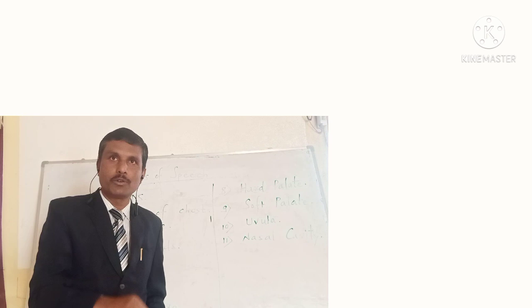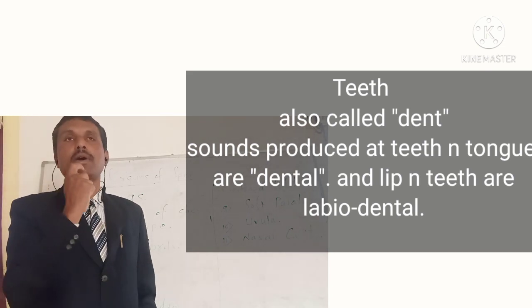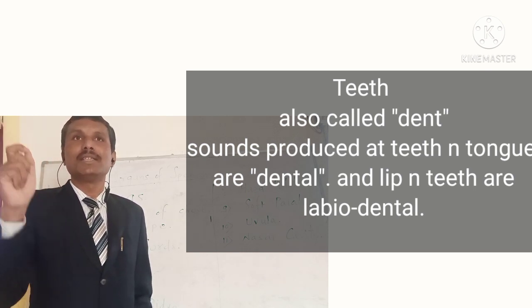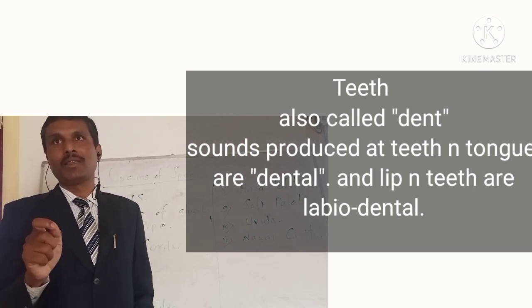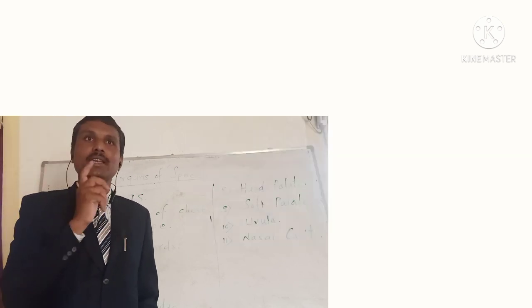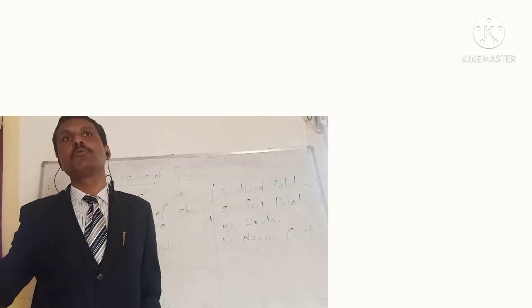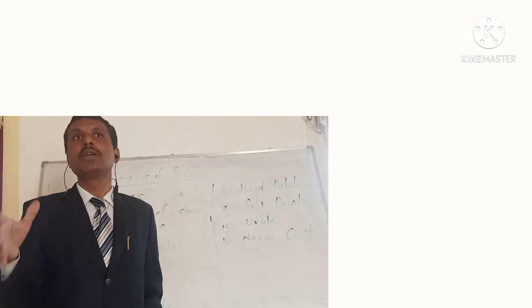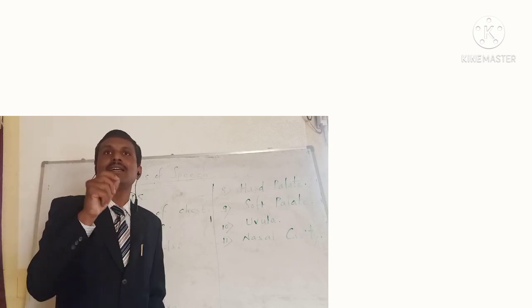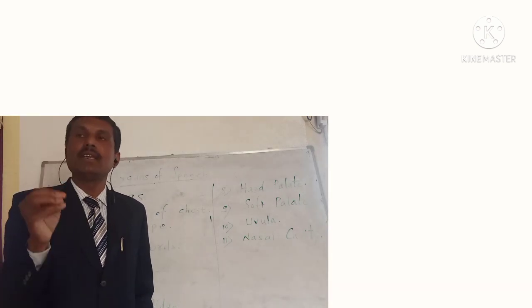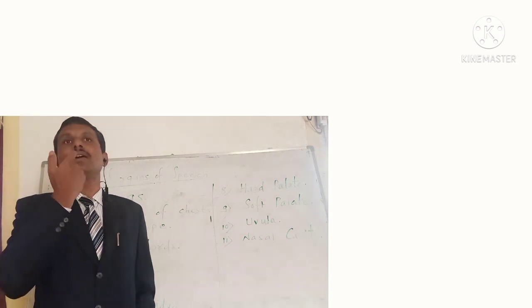After lips, we have teeth. Teeth generally come in contact with the lower lip or the tongue. If they produce sounds while in contact with the lower lip, this is called a labiodental sound. If sounds are produced with the help of the tongue and the teeth, they are called dental sounds. Notably, no sound is named after the tongue because the tongue is involved in the production of the majority of sounds, so we don't use its name.